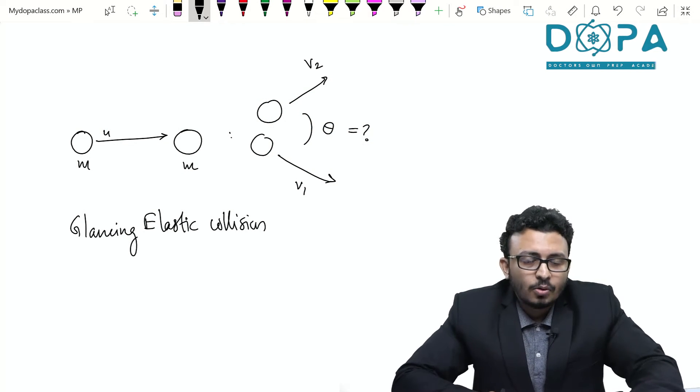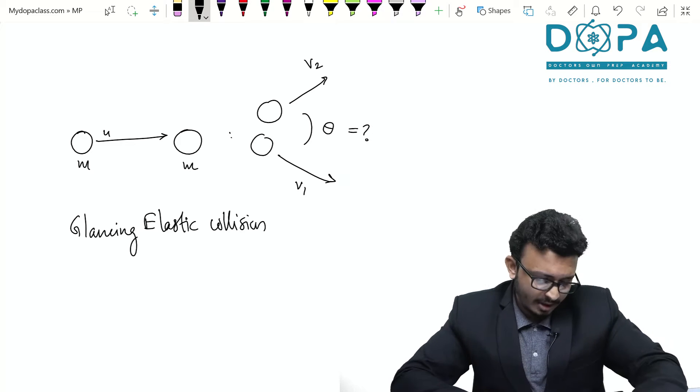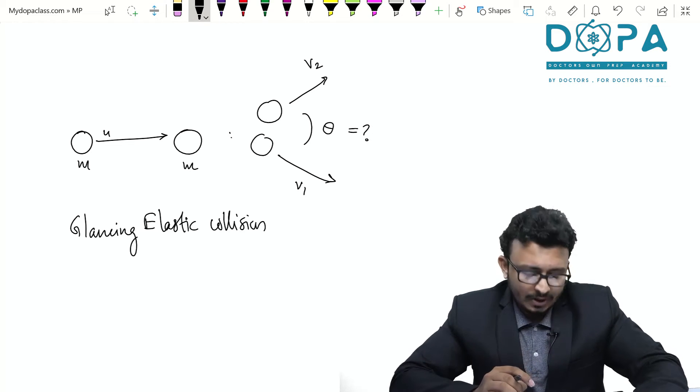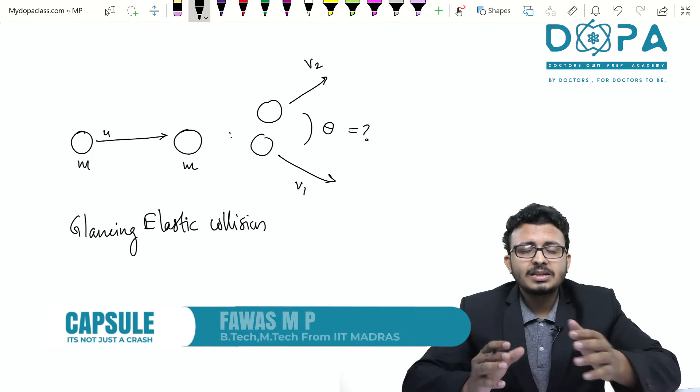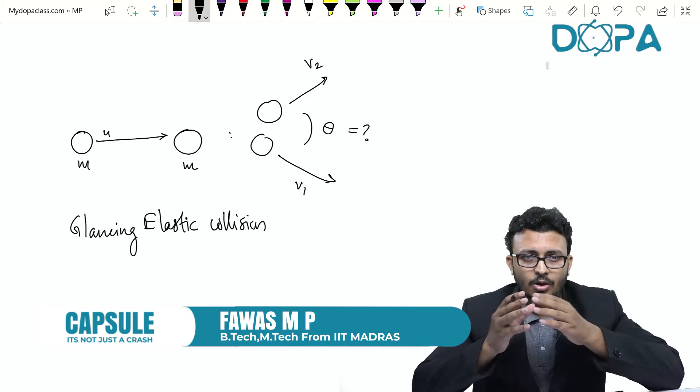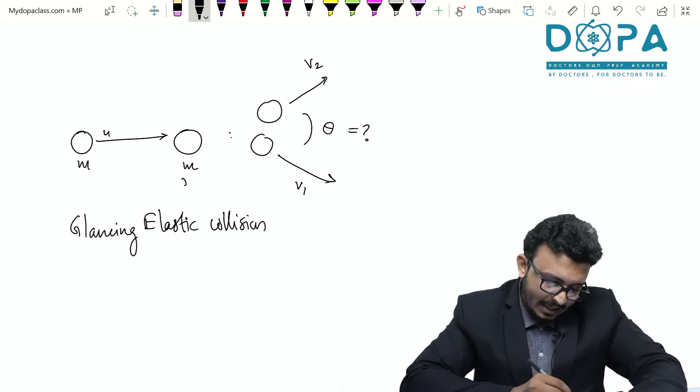Let's check the glancing elastic collision in two dimensions. So I have a special case over here. A mass M which is moving with velocity U collides in a glancing fashion. That means it's not a head-on collision on an identical mass M which is at rest.